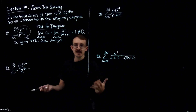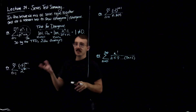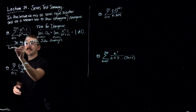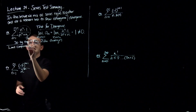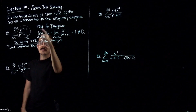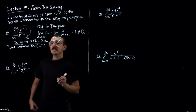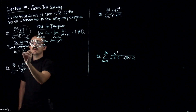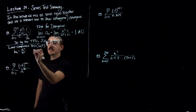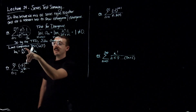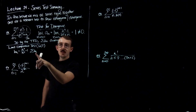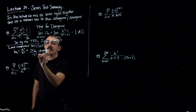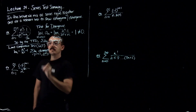If you get 0 it's inconclusive and you have to try something else, but this time we got 1 so it just diverges. Another thing you could try here is the limit comparison test. The reason you might think about this one is because you have a polynomial over a polynomial. So for the limit comparison test, I'm going to take the two dominating terms: n² over n².